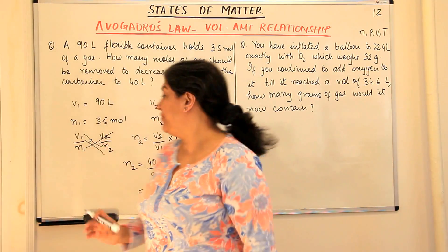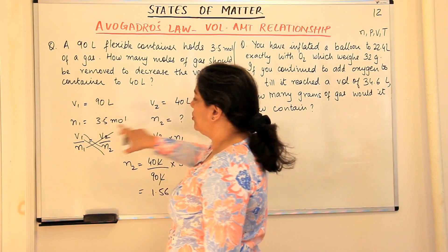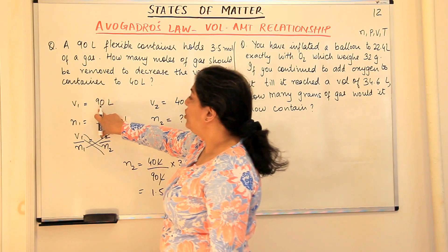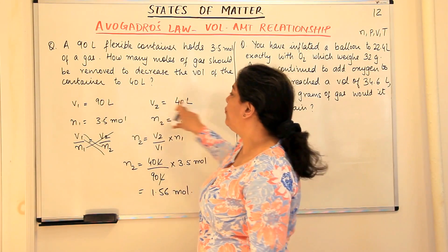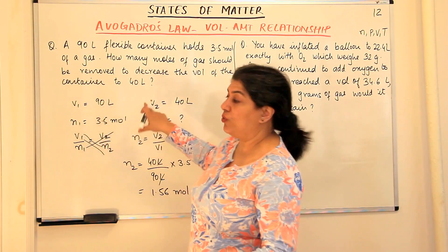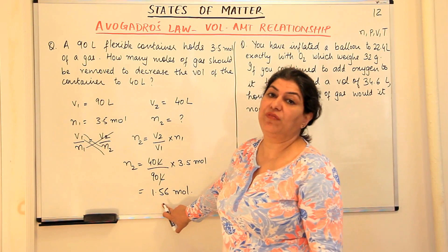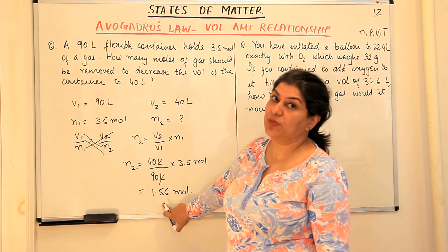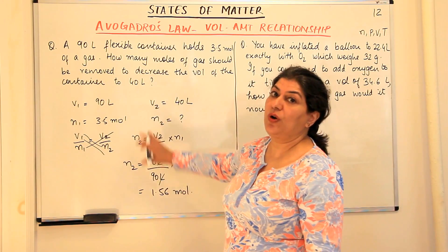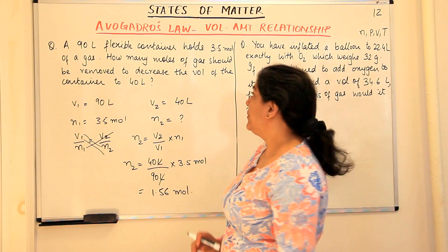How would you verify? The volume is going down from 90 to 40 liters, so number of moles should also go down. We had 3.5 moles and the answer is 1.56 moles — confirming that Avogadro's law is applicable and our answer is correct.